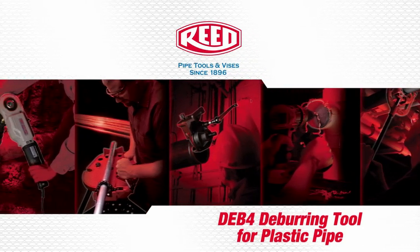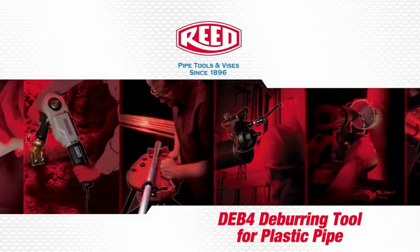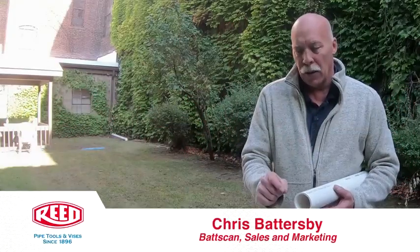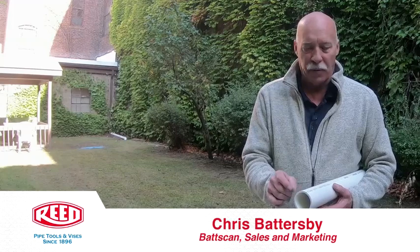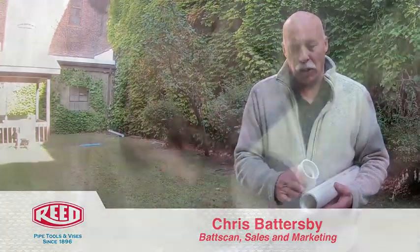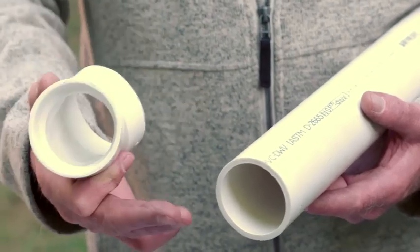Two things you must have to properly solvent weld plastic pipe—ABS, PVC, CPVC: a square cut on the end of the pipe and a 15-degree bevel. If you just cut your pipe with a sawzall or tubing cutter and don't put the chamfer or bevel on the end of the pipe when you stick a fitting on...